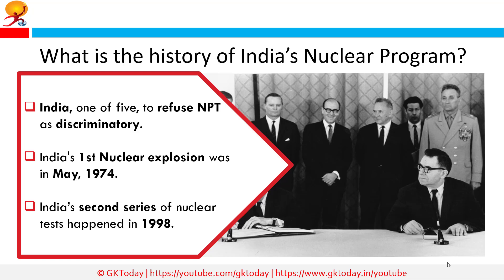India is one of the five countries that either did not sign the NPT or signed it but withdrew, alongside Pakistan, Israel, North Korea and South Sudan. India's first nuclear explosion was in May 1974 in Pokhran, and India argued it was committed to using nuclear power only for peaceful purposes. India also opposed the indefinite extension of the NPT in 1995, refused to sign the Comprehensive Test Ban Treaty, and conducted a second series of nuclear tests in May 1998, demonstrating its capacity for military nuclear use. Pakistan soon followed, increasing the region's vulnerability to nuclear exchange, and international sanctions were imposed on both countries but subsequently waived.